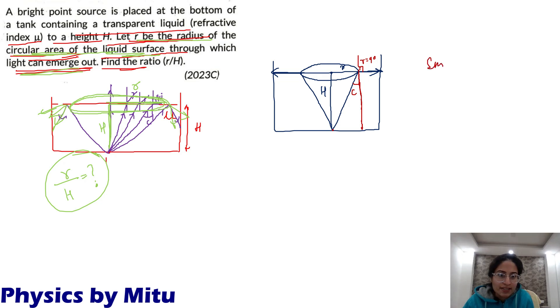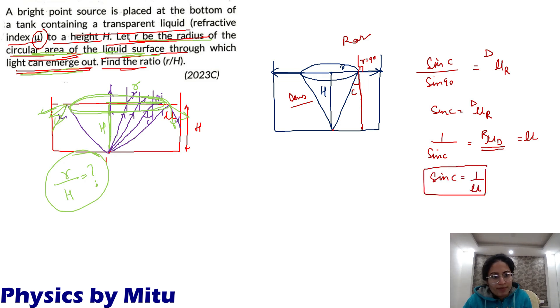Apply Snell's law. Sine C upon sine 90 is mu of rarer medium with respect to denser. This is rarer and this is denser medium. Sine C is mu of rarer with respect to denser. Taking reciprocal, 1 by sine C is mu of denser medium with respect to rarer. Denser medium means the liquid medium, and it is given mu. So sine C is 1 by mu. This we know from Snell's law.